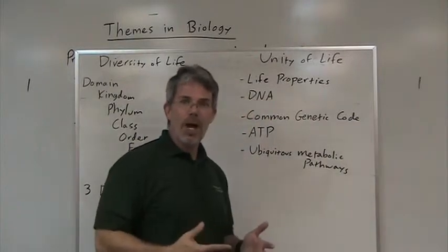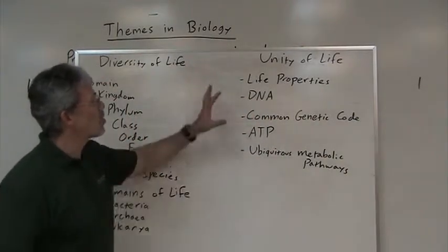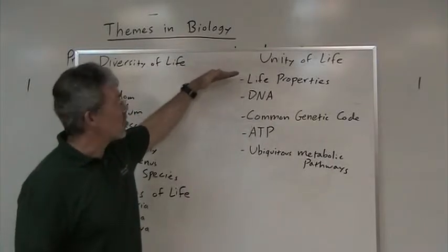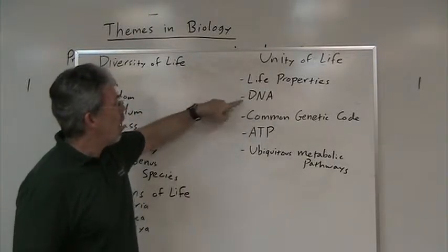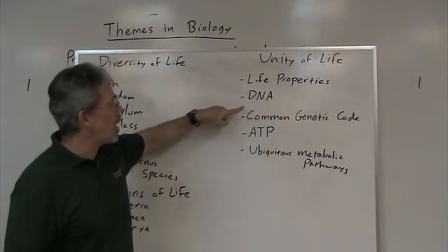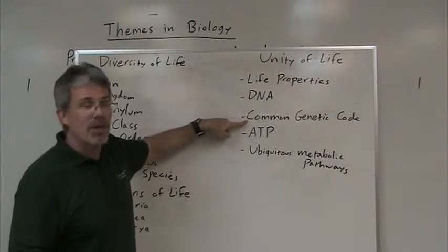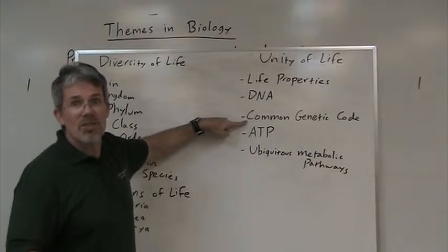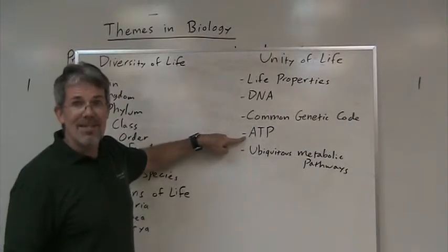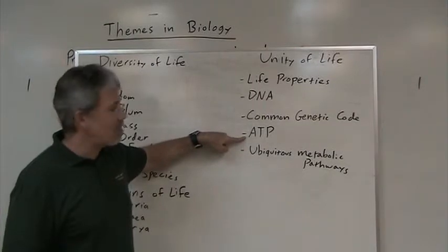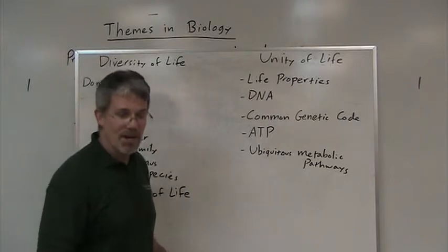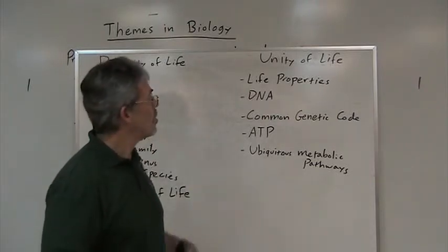But despite the incredible diversity of life, there's also a unity of life — the properties described earlier in this video. All living things have a genetic code that uses DNA, and this genetic code is expressed in virtually the same way in every living thing. Living things use ATP — adenosine triphosphate — as the energy molecule, and there are various metabolic pathways that are common to every living thing as well.